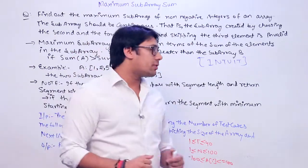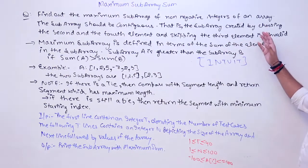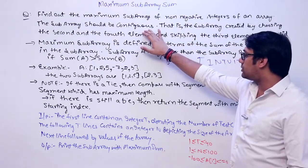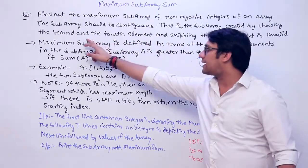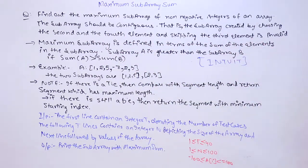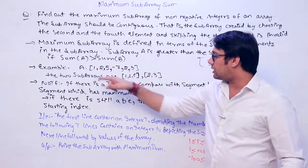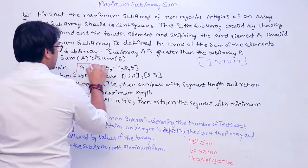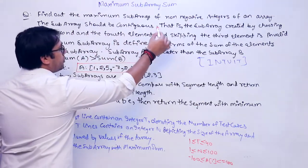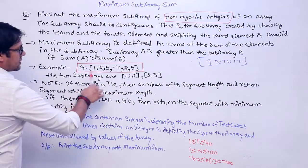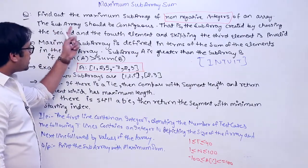Now let's read the problem. The problem says: find out the maximum subarray of non-negative integers of an array. The subarray should be contiguous — a subarray created by choosing the second and fourth elements and skipping the third element is invalid. For example, given an input array, we have to find a subarray which does not contain any negative integers, and the subarray must be contiguous.